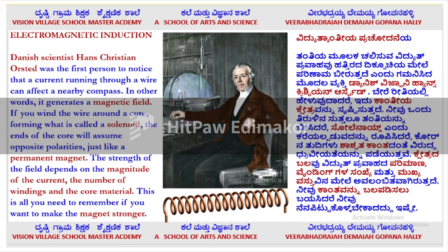Electromagnetic Induction. Danish scientist Hans Christian Ørsted was the first person to notice that a current running through a wire can affect a nearby compass. In other words, it generates a magnetic field. If you wind the wire around a core, forming what is called a solenoid — this is a solenoid.